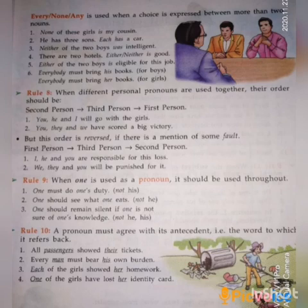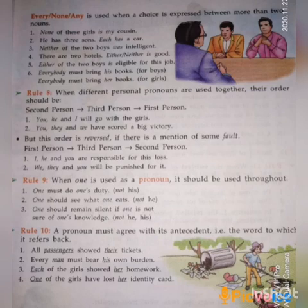Rule 8: When different personal pronouns are used together, their order should be: second person, third person, then first person. Example: 'You, he and I will go with the girls.' Here 'you' is second person, 'he' is third person, and 'I' is first person. Another example: 'You, they and we have scored a big victory.'